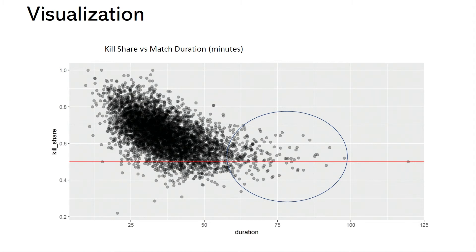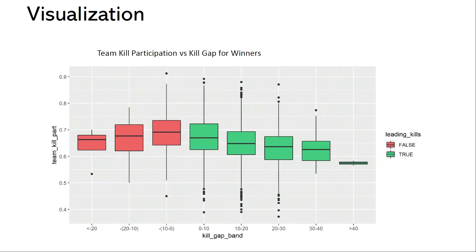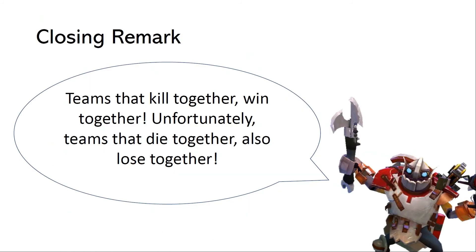These closely-fought matches are interesting. I found something interesting in the data here. We have a kill gap band on the x-axis, showing how closely fought the matches were — a 40-kill gap lead on the right, all the way to 0-to-10 in the middle, the most closely fought games, and then on the left an actual negative gap. What we can see is that team kill participation actually improves towards the center. So for games that are very closely fought, having high kill participation — being involved in the teamfights — is one of the most successful predictors of victory. Teams that kill together, win together.